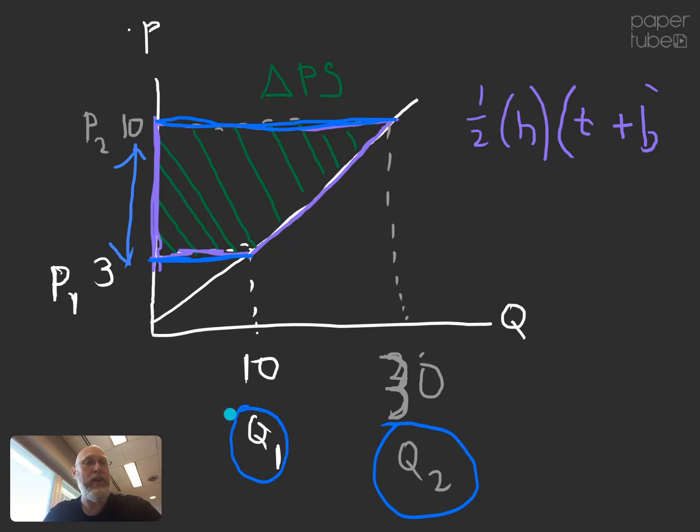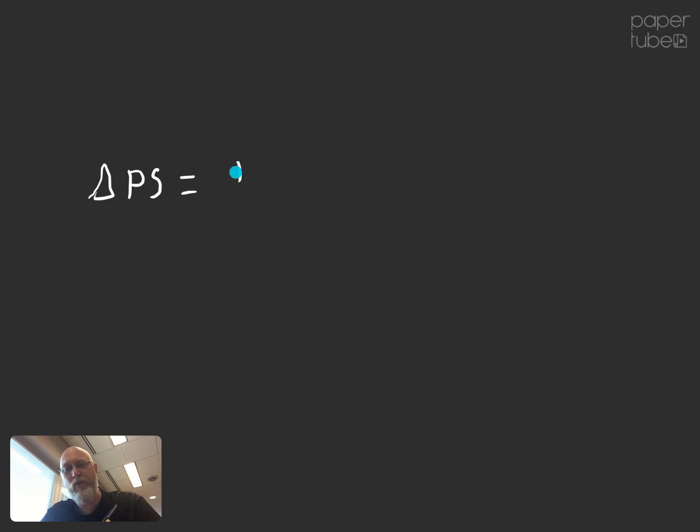So we could rewrite that formula in a manner, if you wanted a formula that always kind of works that you can plug the numbers into. The change in producer surplus is equal to one half of P2 minus P1. It's always P2 minus P1, times Q1 plus Q2. Now you could do this Q2 plus Q1 or whatever because it's additive and they stay the same. It doesn't matter which quantity you put first. You get the same number because you're adding the numbers together.